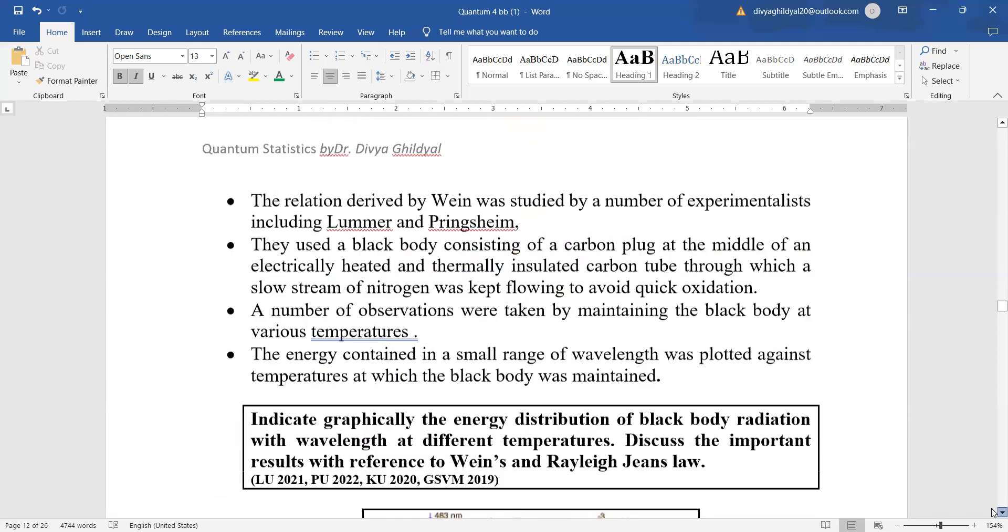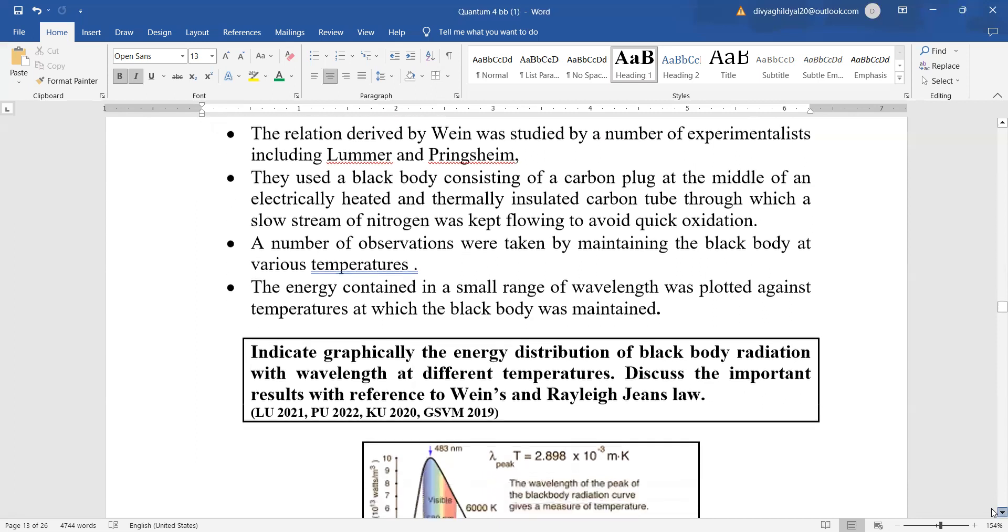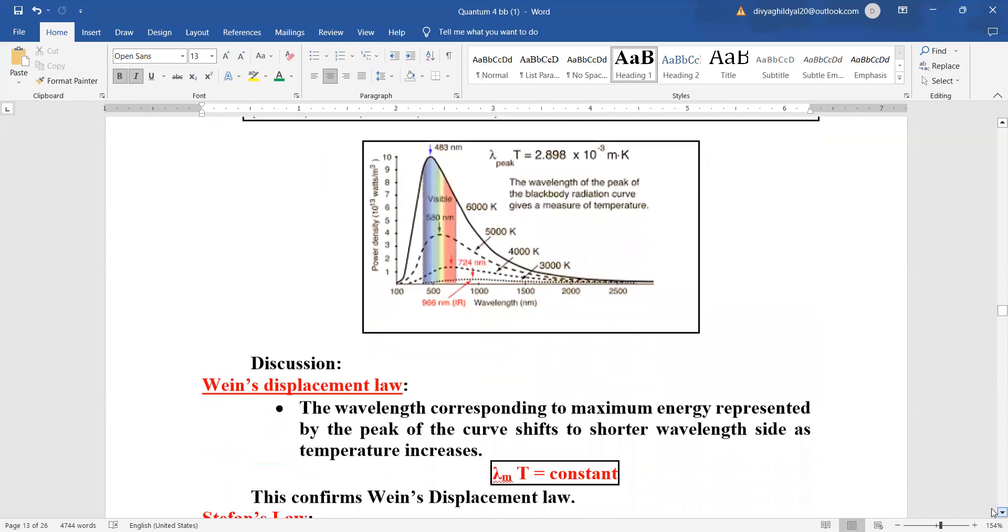Next, the relation derived by Wayne was studied by a number of experimentalists and it proved true but only for the shorter wavelength side. For the higher one we had to switch over to Planck's law. So indicate graphically the energy distribution of black body radiation with wavelength at different temperature and along with it discuss the very important results with reference to Wayne's and Rayleigh genes law. Once again we will show this spectrum.